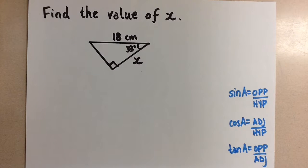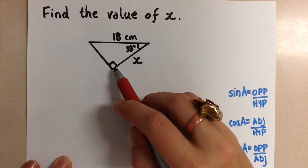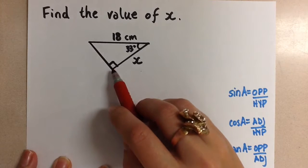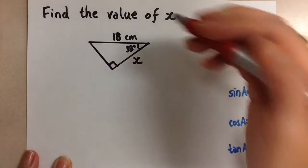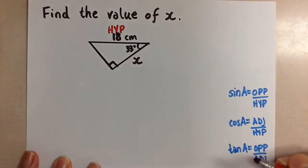The first thing we do is label the sides hypotenuse, opposite, and adjacent. So to do that you first locate the right angle and usually we know how to do that because of the Pythagorean theorem. And then the side opposite of the right angle is always the hypotenuse. So we'll label that here.